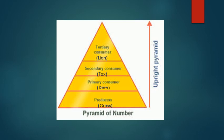Look at this pyramid. At the first level we have producers — the grass, for example — which are much more in number as compared to the primary consumers, which are deer. Deer are eaten by the fox, which are the secondary consumers, and these secondary consumers are much lesser in number as compared to the primary consumers.